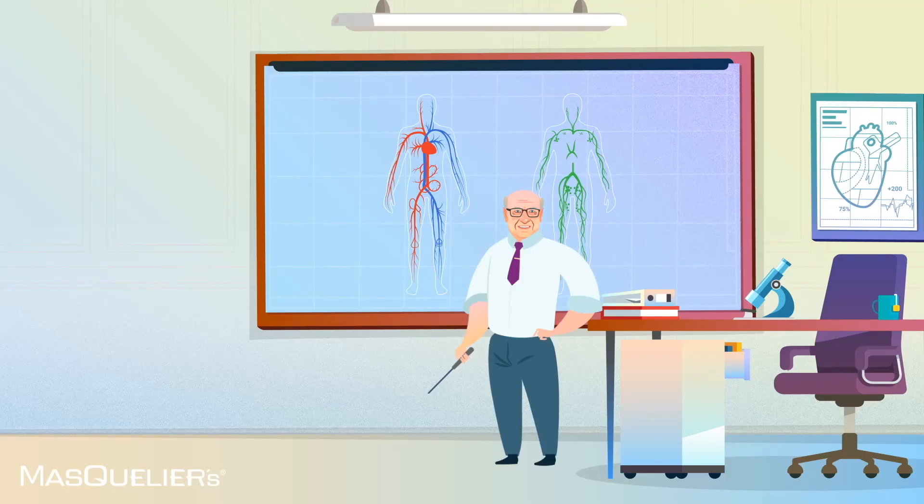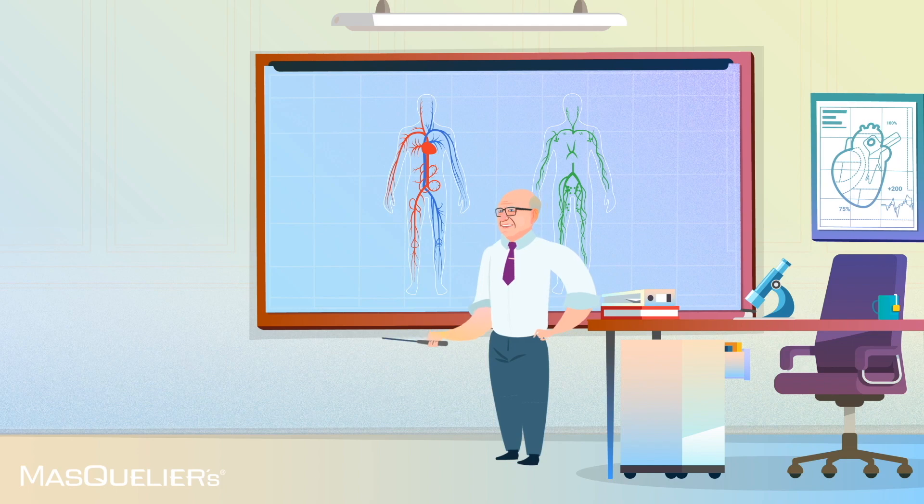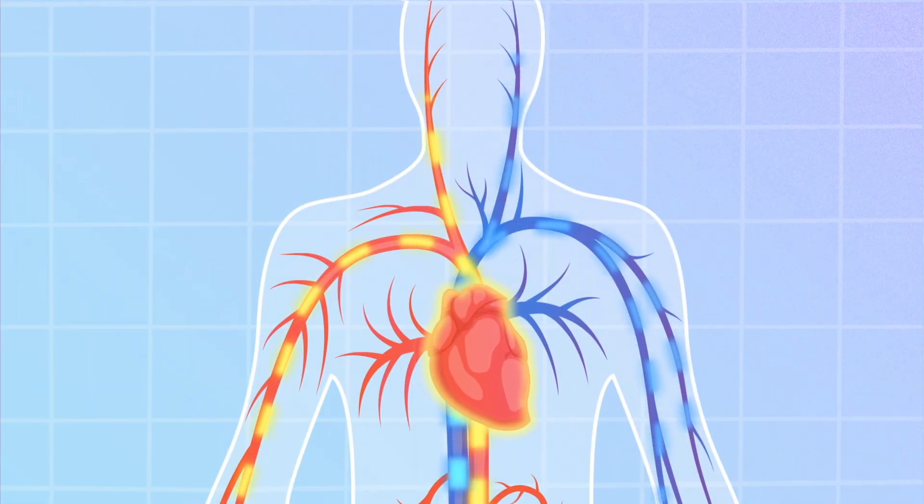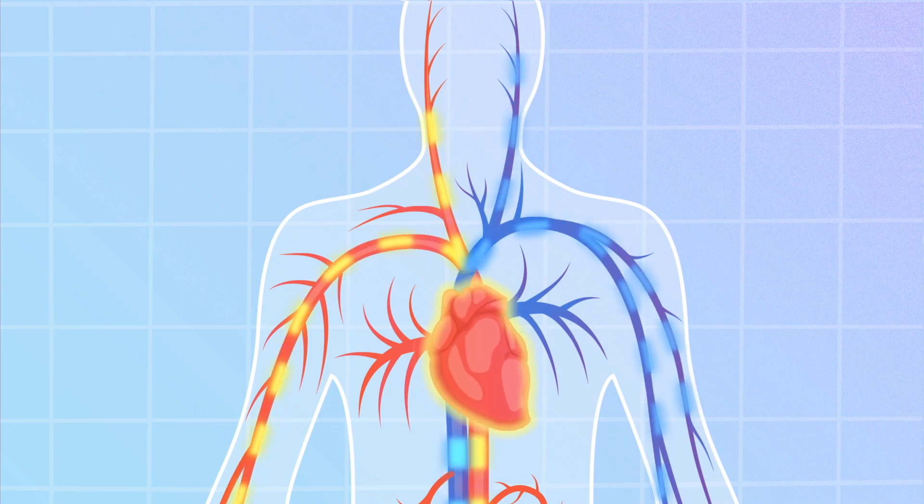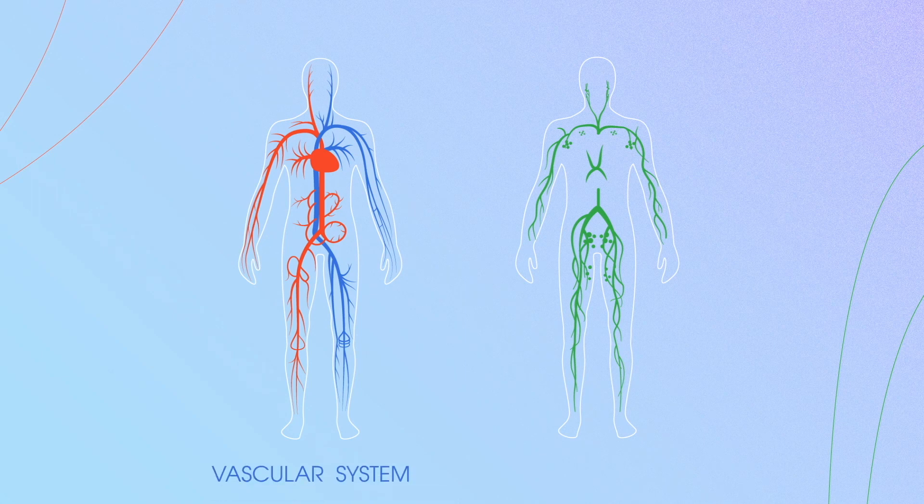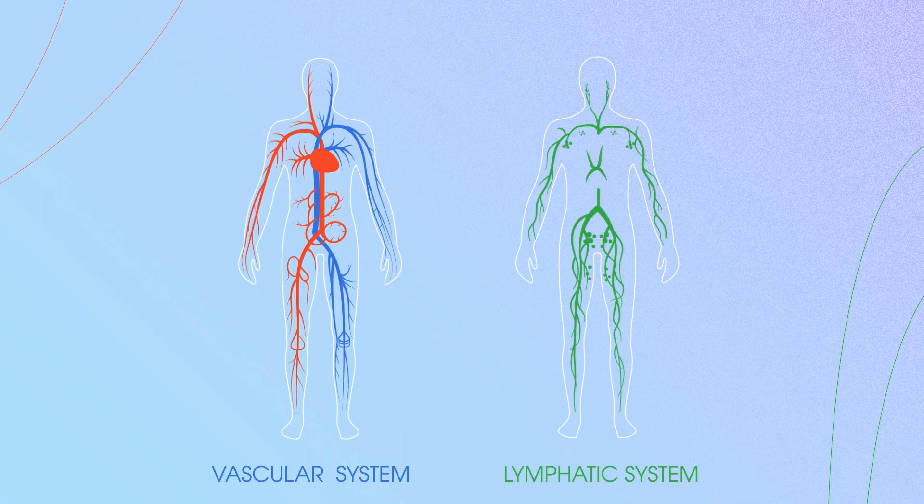Sixty percent of our body is made up of watery fluids that are essential to life. Responsible for transporting all this fluid around our body is the circulatory system. The circulatory system comprises the vascular and lymphatic system, both of which are incredibly important.